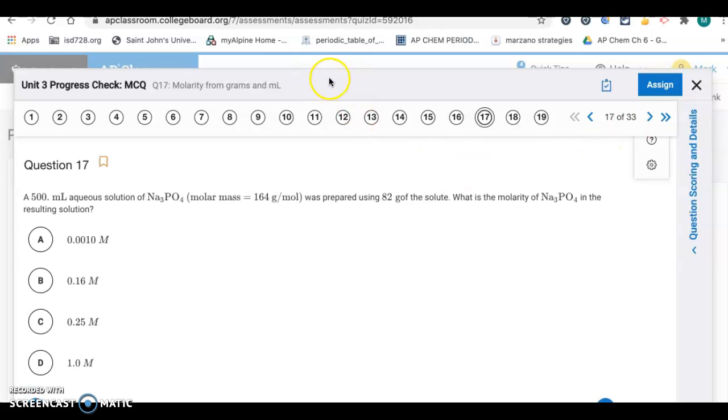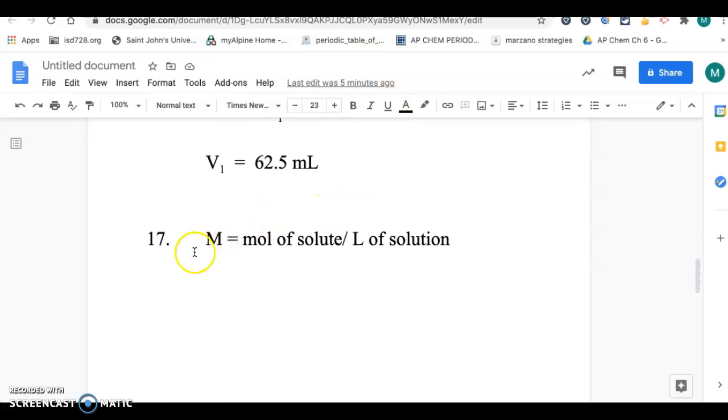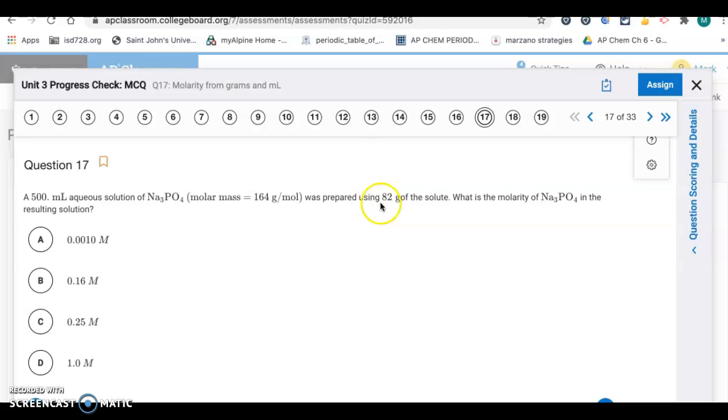Next, a 500 milliliter aqueous solution of Na3PO4 was prepared using 82 grams of the solute. What's the molarity of Na3PO4 in the resulting solution? For number 17, we're using this equation: moles of solute divided by liters of solution. To get moles of solute, it would be 82 grams divided by 164. That's 0.5, half a mole. Then divide by the volume, 500 milliliters, 0.5 liters. So it ends up being 0.5 moles divided by 0.5 liters, so it's just one molar, letter D.